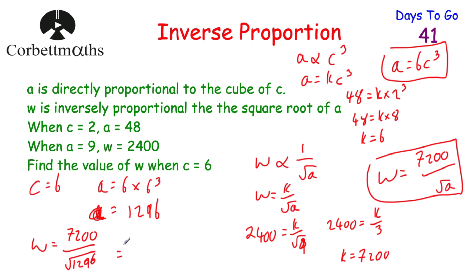√1296 = 36, so W = 7200 divided by 36 = 200. So W = 200. Well done if you got that.